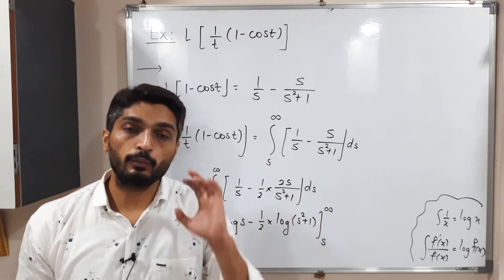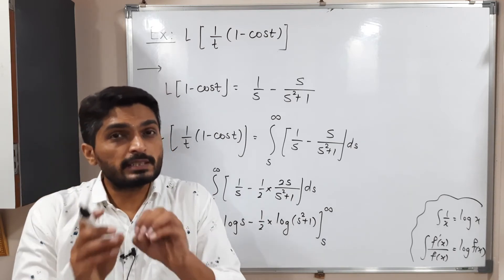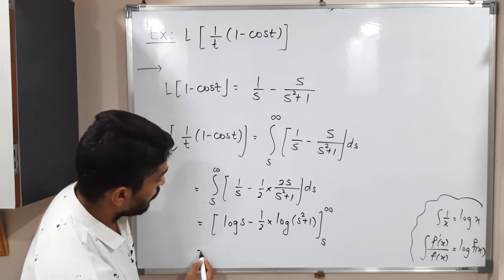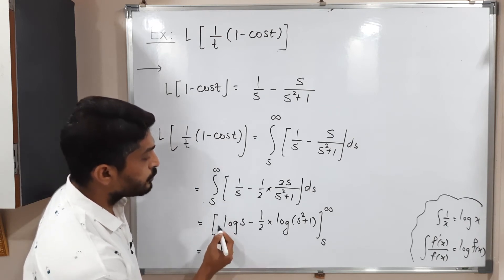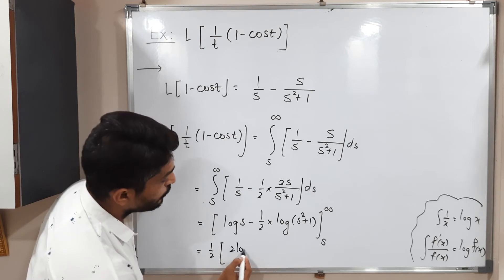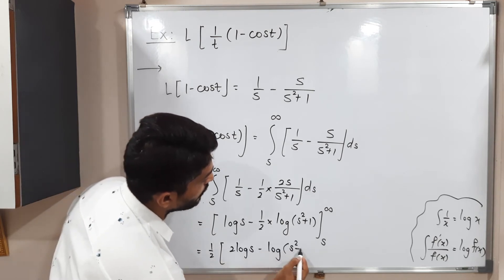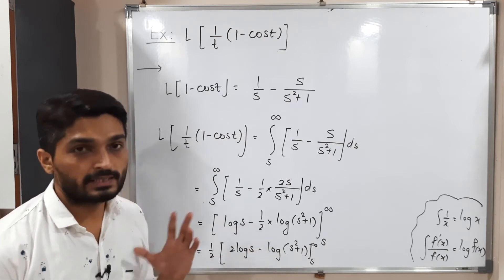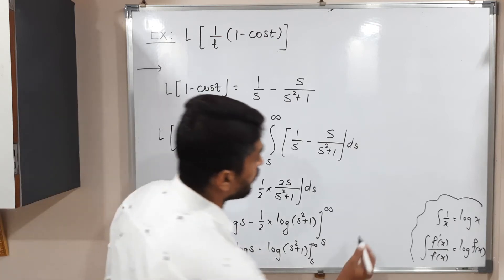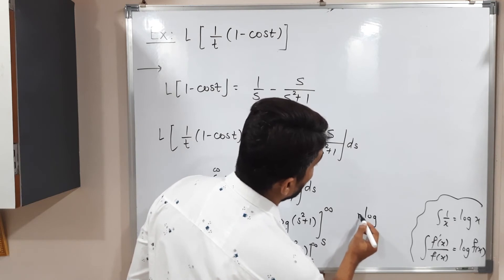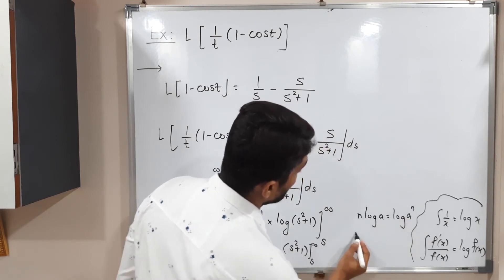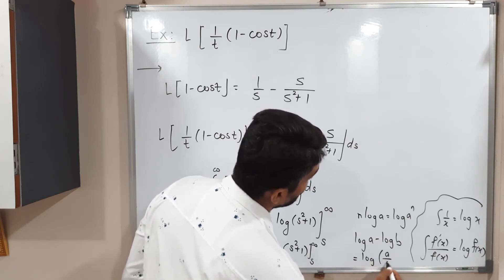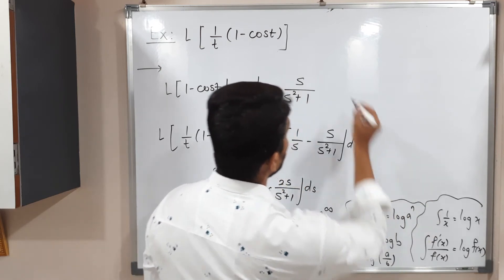We simplify before putting in the limits. Taking one half as common, we use the property of log: N log A equals log A raised to N. So two log S becomes log S squared. Also, log A minus log B equals log A upon B. We have two log properties: N log A equals log A to the N, and log A minus log B equals log A upon B.